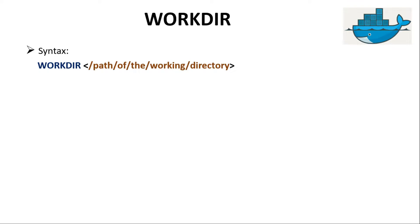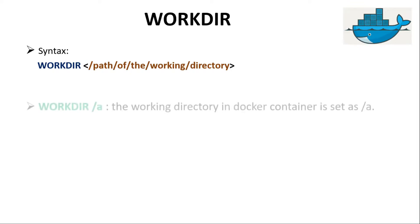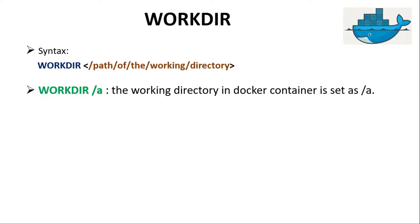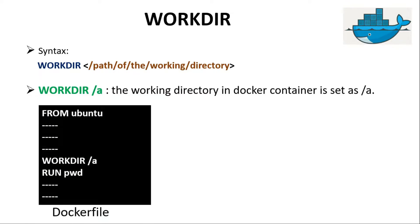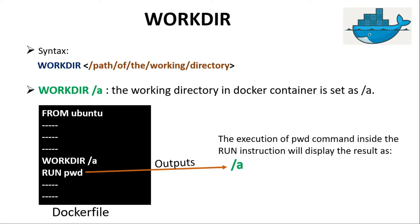For example, if we write the WORKDIR instruction as `WORKDIR /a`, then the working directory path inside the Docker image will be set as `/a`. If we then write the `pwd` command inside the Dockerfile after this WORKDIR instruction, the output of that `pwd` command will be displayed in the terminal as `/a`.